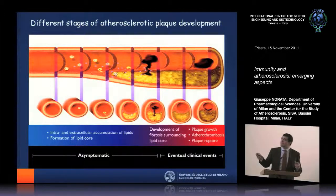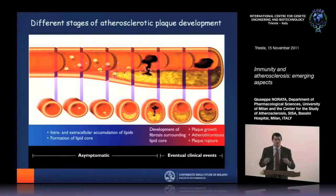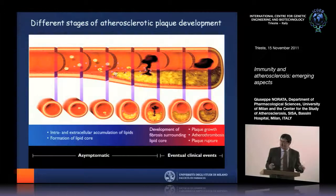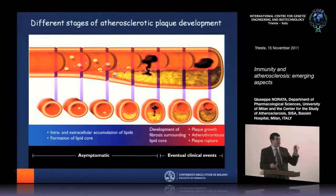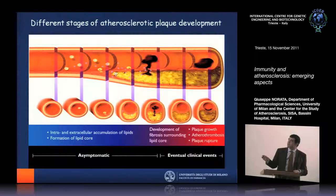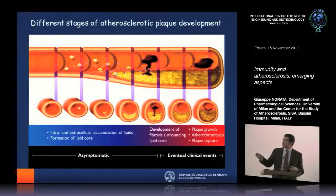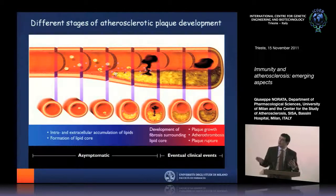Everything starts with an endothelial dysfunction. The endothelium, which is the upper layer of the vessel, gets damaged and becomes dysfunctional. This helps in attracting immune cells which interact with the endothelium and forces the deposition of lipids within the subendothelial space. Over years, cholesterol accumulates there — this is what we normally call the formation of a lipid core.